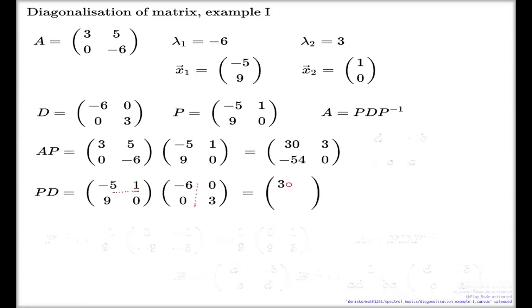First row, first column, 30. It's negative 5 times negative 6. First row, second column, 3. Second row, first column, negative 54. And the last one is 0. AP equals PD.